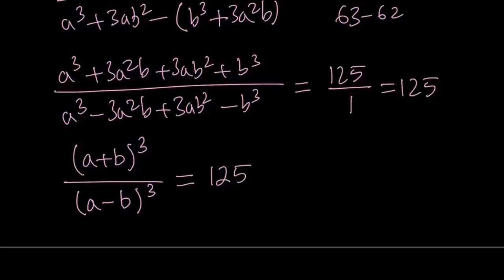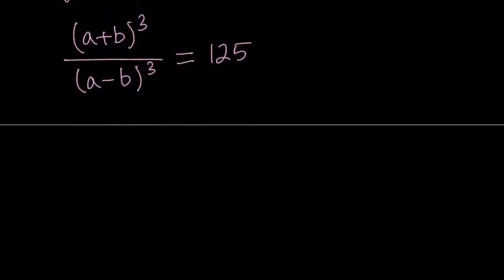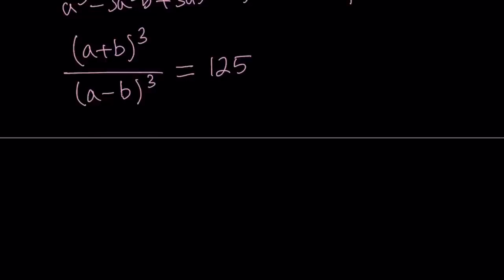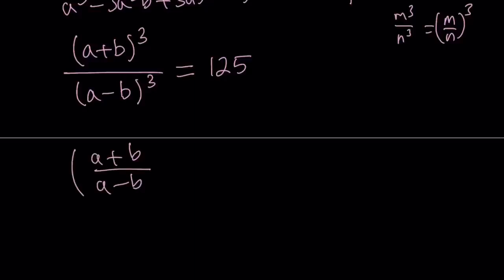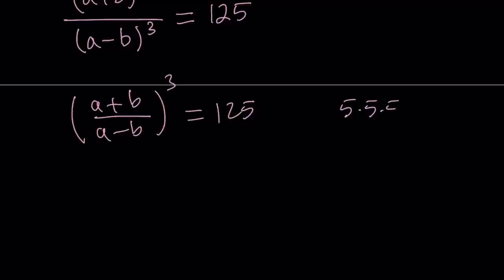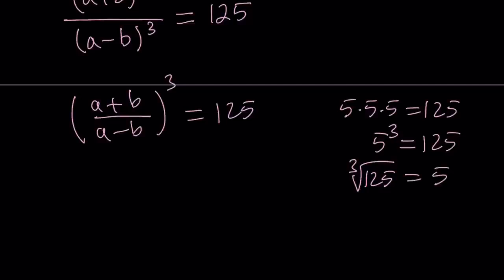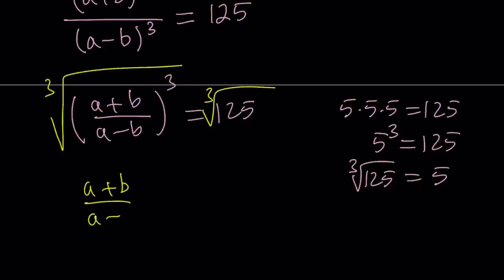Now at this point we can cube root both sides, but let's take advantage of a property of exponents. If you have something cubed divided by another thing cubed — like m cubed over n cubed — you can write it as (m over n) cubed. So let's do the same thing here: (a plus b) divided by (a minus b), all to the third power, equals 125. What number to the third power equals 125? That's the cube root of 125, which is 5. So cube-rooting both sides gives us a plus b divided by a minus b equals 5.